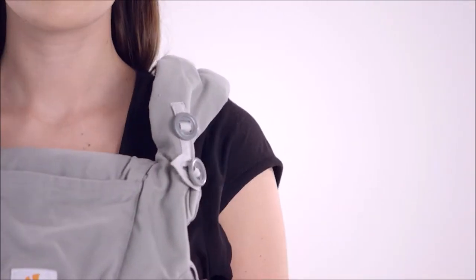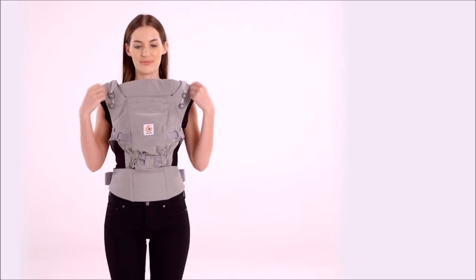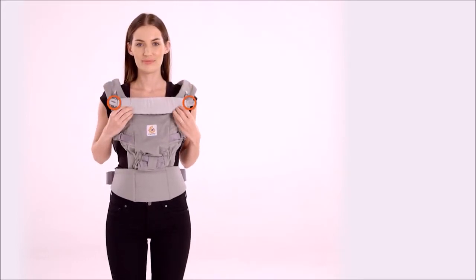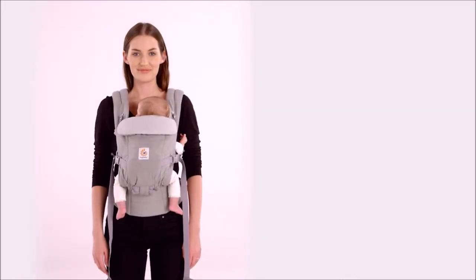When baby starts to hold her head for a few moments and turns it from side to side, you can fold and button the neck cushion on the outside. This happens usually around six weeks.